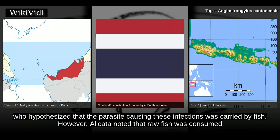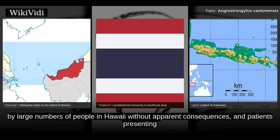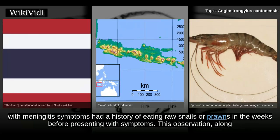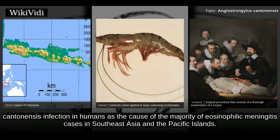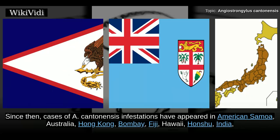However, Alikata noted that raw fish was consumed by large numbers of people in Hawaii without apparent consequences, and patients presenting with meningitis symptoms had a history of eating raw snails or prawns in the weeks before presenting with symptoms. This observation, along with epidemiology and autopsy of infected brains, confirmed A. cantonensis infection in humans as the cause of the majority of eosinophilic meningitis cases in Southeast Asia and the Pacific Islands.